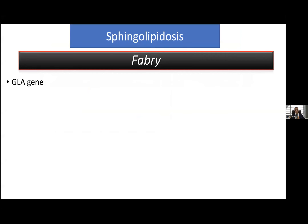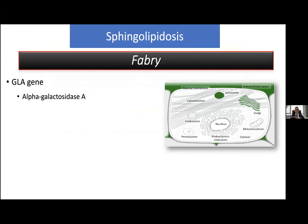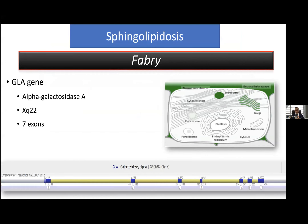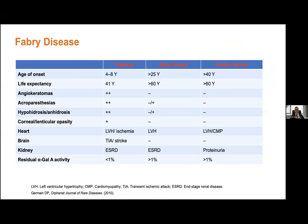Now I want to talk about Fabry disease. It is also a sphingolipidosis. The Fabry gene — the GLA gene — is located on the X chromosome. It consists of seven exons, and this small gene has more than 1,000 different variants. We have two main clinical subtypes: classical Fabry disease and variant Fabry disease, which we can reclassify into renal and cardiac variant Fabry.